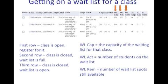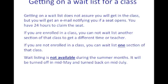During the fall and spring, you can try and get waitlisted for a class if it's not completely open. Pay attention to the WLCAP, WLACT, and WLREM columns if you are trying to get waitlisted — they will let you know if you can still jump on the list. If you get on a waitlist, that doesn't mean you are in that class, just that you will get an email letting you know if a seat opens up. If you are already in one section of a class, you can't try and get waitlisted for another time or teacher — you can only waitlist one section per class. However, the waitlisting option is turned off during the summer months.